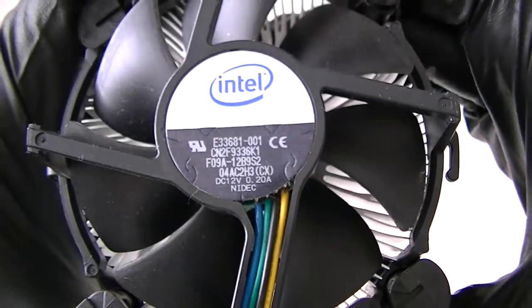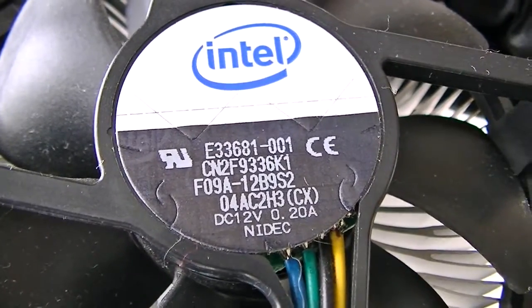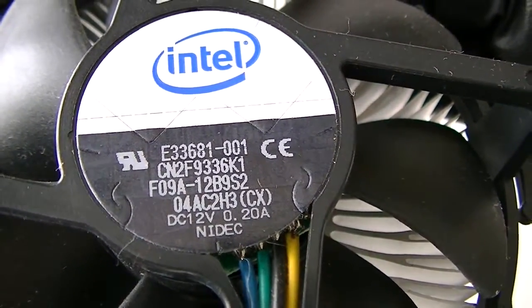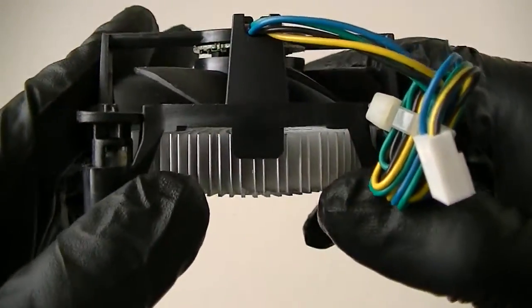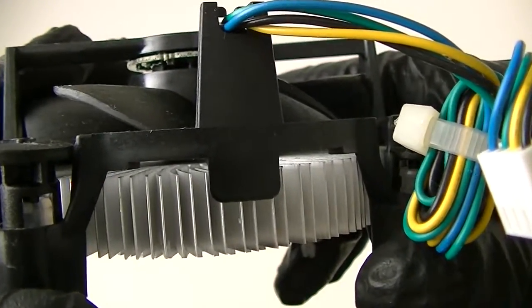Yeah, this is MXKDI here. I have another heatsink fan from Intel, model E33681-001, and this is Socket 775. Really thin aluminum on it, so I would just recommend only for Intel Celeron.